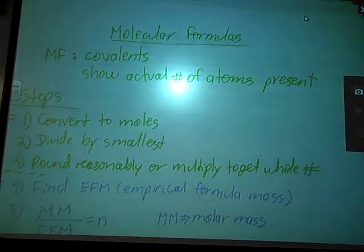Now let's continue on with molecular formulas. Molecular formulas are usually the formulas of covalence, not always, but usually, and these show the actual number of atoms present, contrary to the empirical formulas which only showed the lowest ratio of atoms.